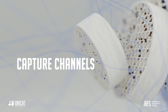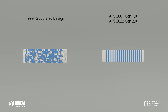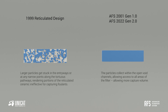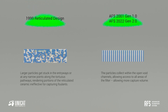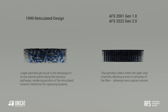Capture channels. The 1999 reticulated design versus the AFS 2001 Gen 1.0 and 2.0 designs. Larger particles get stuck in the entryways or at any narrow point along the tortuous pathways, rendering portions of the reticulated ceramic ineffective for capturing foulants. In comparison, with AFS the particles collect within the vertical void channels, which allows access to all areas of the filter, creating more capture volume.